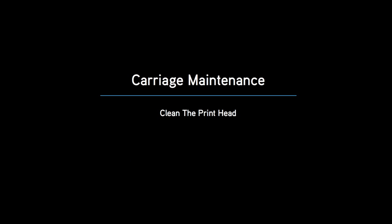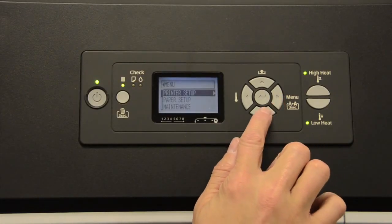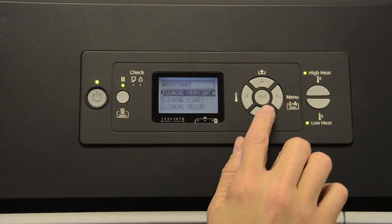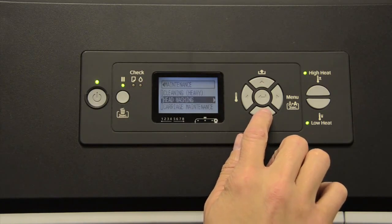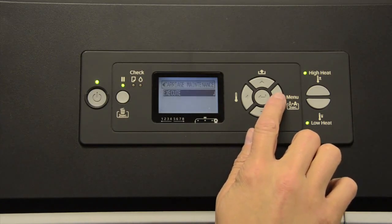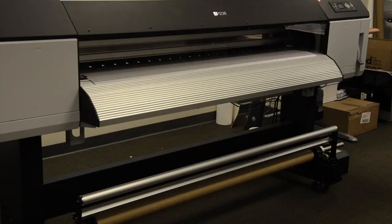To execute the carriage maintenance, we will enter the carriage maintenance menu. We will pass by the cleaning cycles and move into carriage maintenance. We will then enter carriage maintenance and execute the carriage maintenance function. By executing this function, this will move the GS6000 print head into the maintenance position.